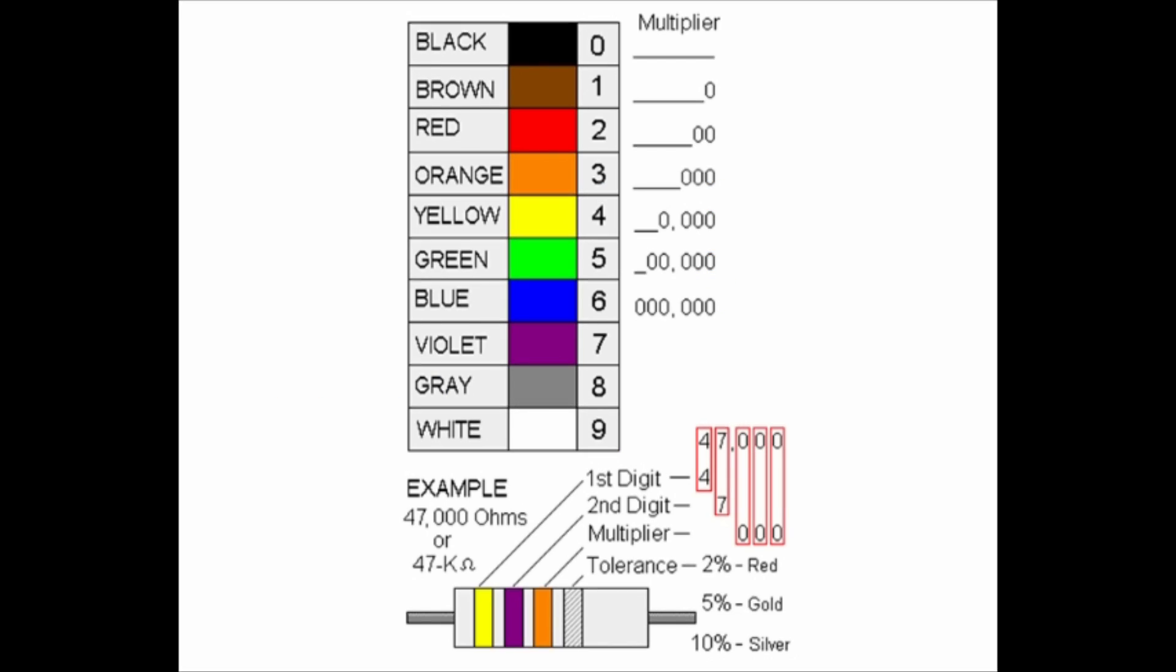The third color however is a multiplier. The value of the third color represents how many zeros you need to attach to your first two numbers. The fourth as mentioned previously is your tolerance.